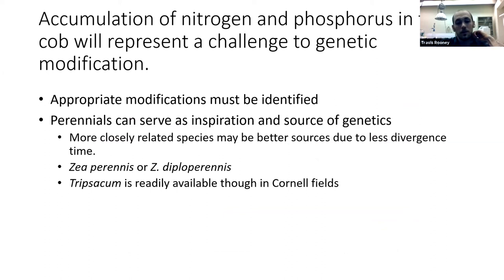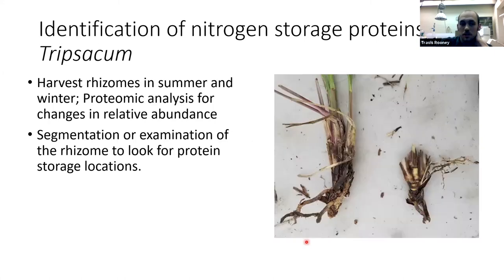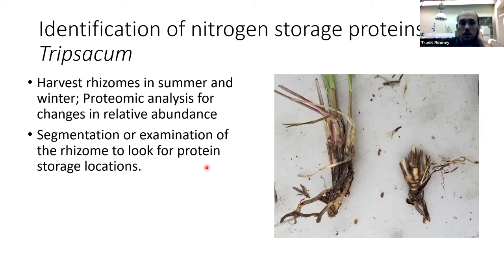More closely related species may be better sources. We have Tripsicum available in the Cornell fields, and we're going to look at what nitrogen storage proteins Tripsicum uses within its rhizomes to store nitrogen across successive years. We'll do proteomic analysis in summer and winter, look for changes in relative abundance, and try to find where it's storing its nitrogen. We can then use those protein sequences to identify homologues in maize that could be co-opted, or use those actual proteins as sources for modification.